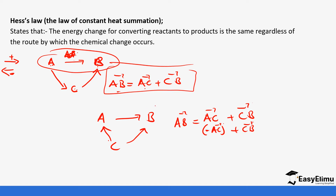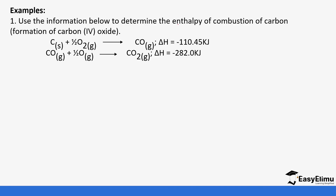Let's do a few examples of Hess law. What we are drawing here is the cycle diagram. You can also present your values in an energy level diagram. So, using the information below, determine the enthalpy change of combustion of carbon. We need to find the enthalpy of formation of carbon dioxide. Carbon dioxide is CO₂, formed from carbon and oxygen: carbon solid plus oxygen gas to form carbon dioxide gas.